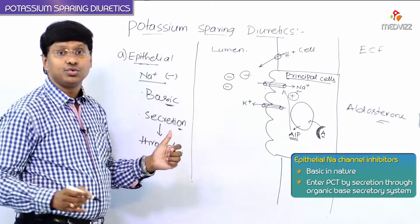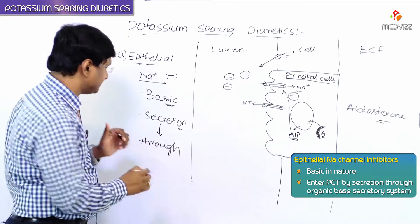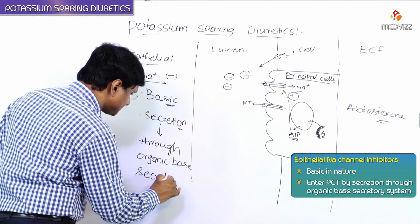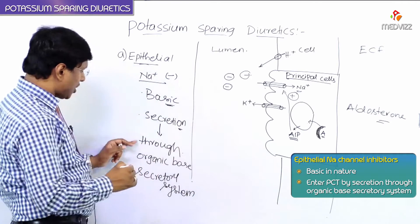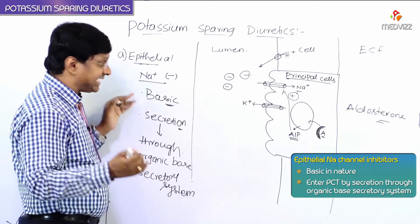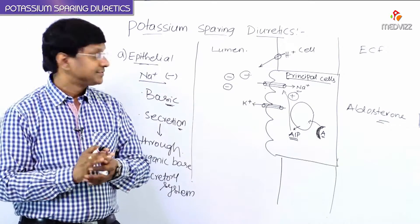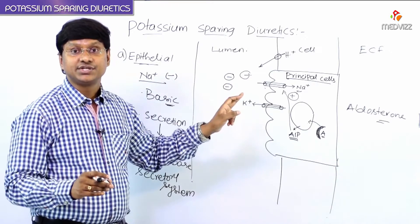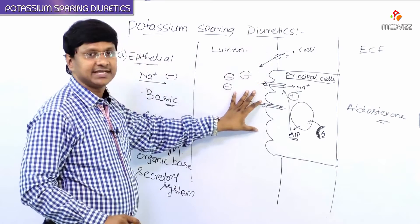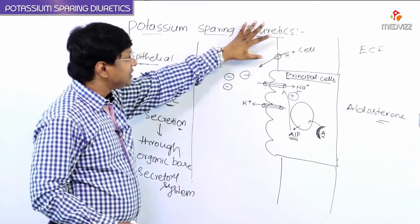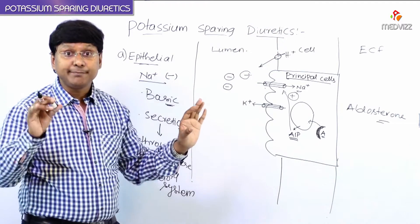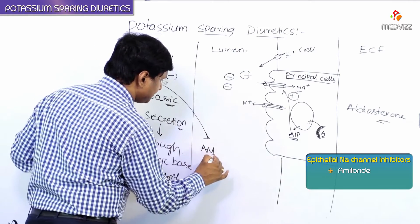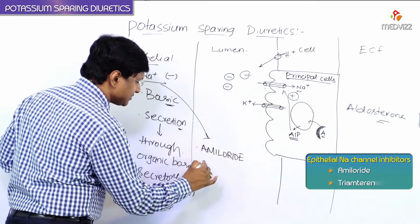Secretion of these substances is through what is called the organic base secretory system. Through this system, these epithelial sodium channel inhibitors get secreted into the lumen of the proximal tubule. By traveling through the lumen, these drugs reach their site of action at the level of the late distal tubules and as well as the collecting duct. The important members of these drugs include amiloride and triamterene.